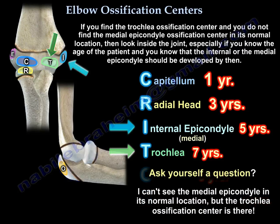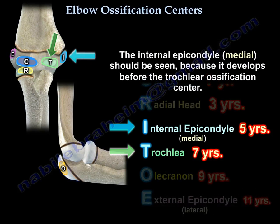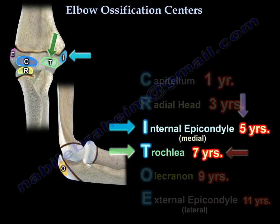So when you ask yourself: I cannot see the medial epicondyle in its normal location, but the trochlea ossification center is there — the internal epicondyle should be seen because it developed before the trochlear ossification center. The internal epicondyle develops at age 5, and the trochlea develops at age 7.